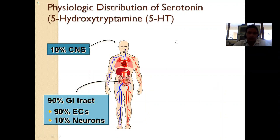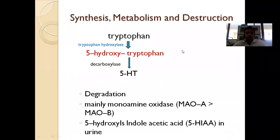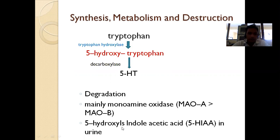Regarding synthesis and metabolism: tryptophan gets converted to 5-hydroxytryptophan, and by the action of the enzyme tryptophan decarboxylase, it is converted to 5-hydroxy tryptamine. Degradation occurs when serotonin is released into the synapse — it is metabolized by MAO (monoamine oxidase) and COMT, which convert it to 5-HIAA (5-hydroxy indole acetic acid), which is excreted in the urine.